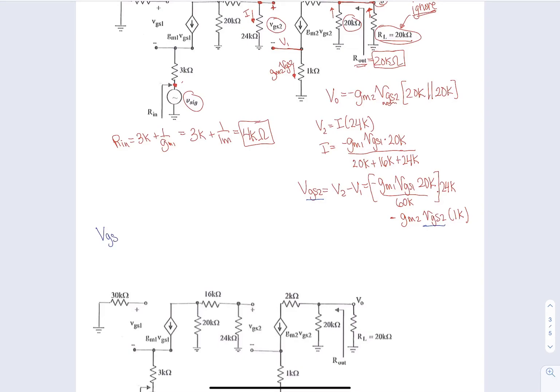So now I see from this equation, I have VGS2 on one side and VGS2 on the other side. So I need to combine both of those. So I bring over that minus GM2 VGS2 over to the other side. And combining this, I get VGS2 and then one plus GM2 times 1K, and now I can divide this quantity onto this side. And that will give me just VGS2 is equal to that.